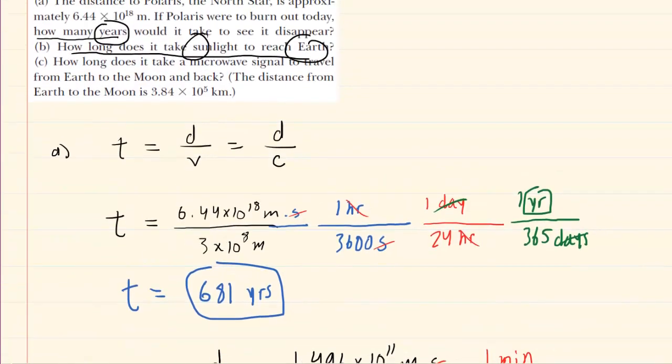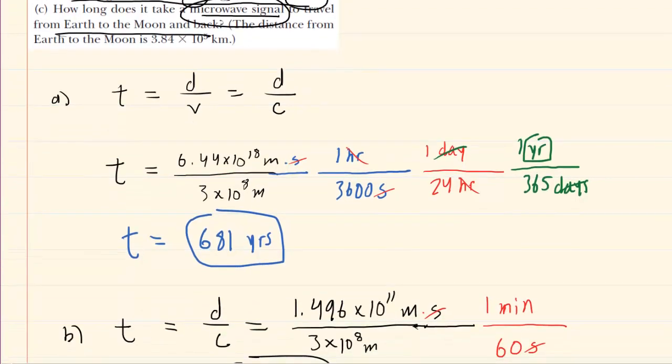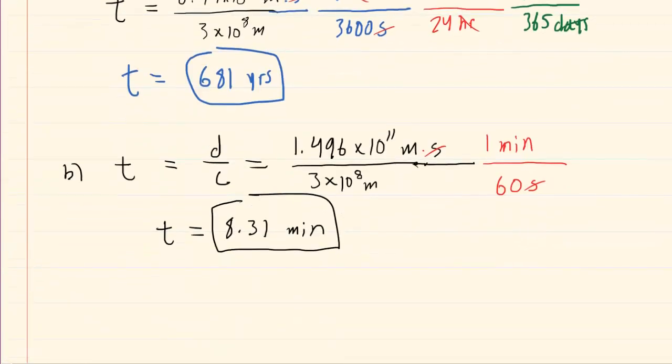Finally, moving on to part C, we need to figure out the time it takes a microwave signal to go from Earth to the Moon and then back. A microwave is basically an electromagnetic wave, so that means it's still traveling at the speed of light.